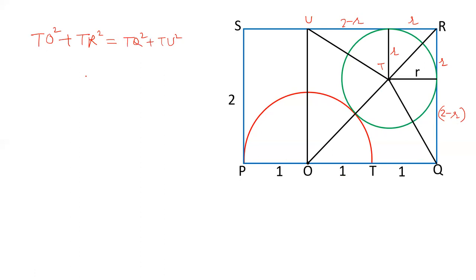Let us check what are the values of different lengths. OT is R plus 1. So this is R plus 1 square. Let us see what is TR. TR is the diagonal of this square. So that will be R square plus R square.